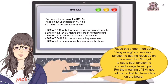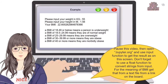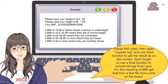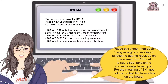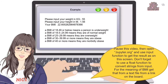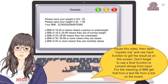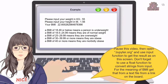Pause this video, then open jupyter.org and use the input function to get the results as shown on this screen. Don't forget to use a float function to convert strings from input. For the meaning of BMI, get that from a text file from the link on the board.